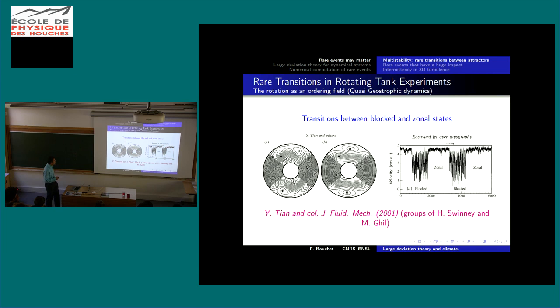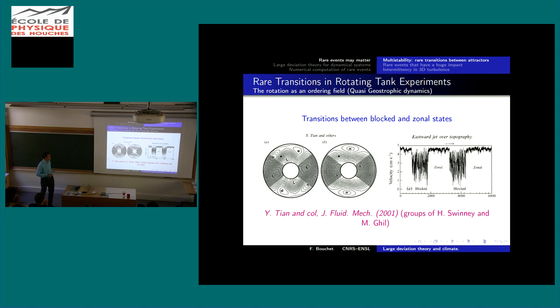When measuring velocity at a point as a function of time, you observe two very different states — zonal and blocked — and from time to time switches between them. The duration of the switch is very fast compared to the typical time spent in one state. This is in contrast to the Earth's atmosphere, where this timescale separation doesn't really hold. This is an example of a bistability situation.